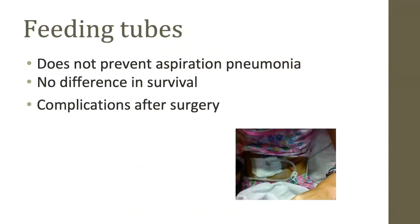Discussing swallowing difficulty naturally leads to the consideration of feeding tubes, which is one of the hardest decisions caregivers may have to make at end of life. Many caregivers express concern that they feel like they're starving their loved one, but it's important to keep in mind that it's common for individuals to lose their sense of hunger and thirst in advanced illness. When there's motor difficulty early on in conditions such as ALS, feeding tubes are sometimes considered, but otherwise there's limited data to support the use of artificial nutrition. In fact, patients can still aspirate their saliva, and there's no difference in survival between those with feeding tubes and those without. Complications can also arise, such as agitation, infection around the surgical site, and diarrhea from the highly concentrated formula.